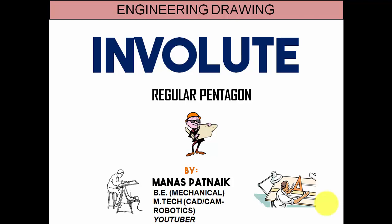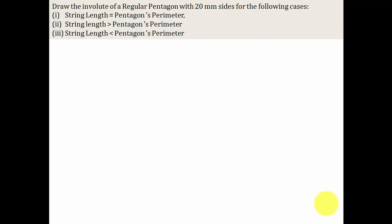Today, we're going to be talking about the involute of a regular pentagon. So, let's see what the problem has in store for us. Draw the involute of a regular pentagon with 20mm sides for the following cases: Case number one, string length equal to pentagon's perimeter. Case two, string length more than the pentagon's perimeter. And case number three, string length less than the pentagon's perimeter.